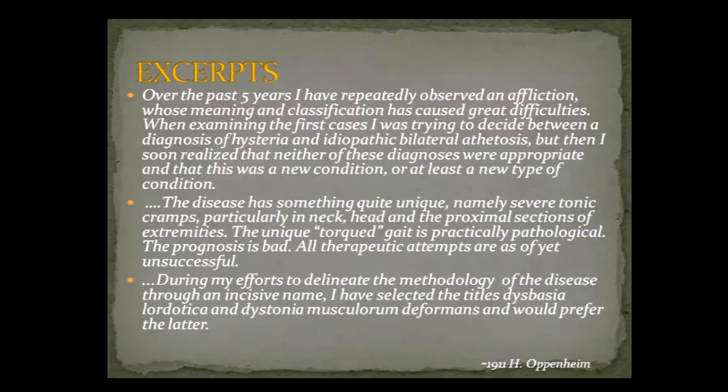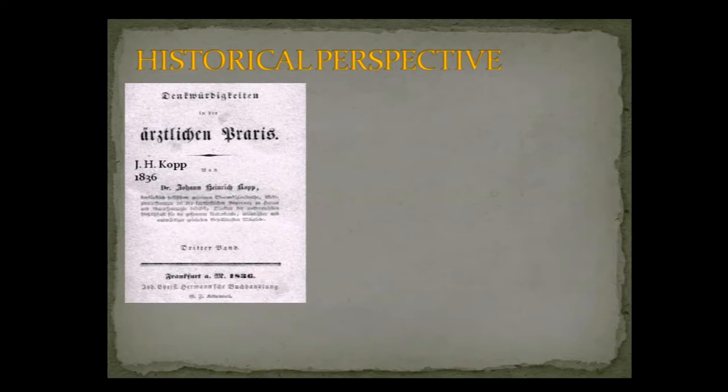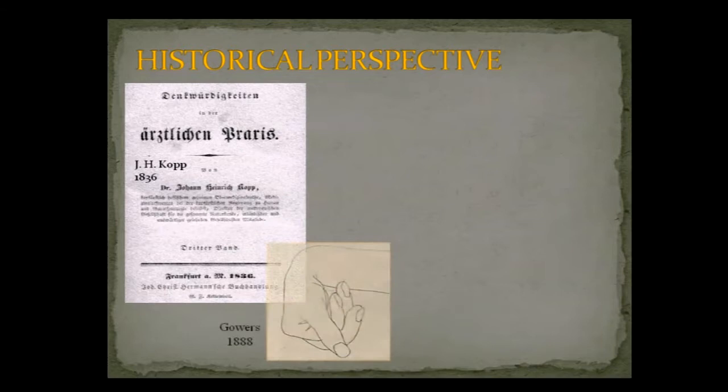He described these movements which he thought had alternating hypertonia and hypotonia. It was really difficult to put that into perspective — was it athetosis, was it chorea? He eventually said we need to do something different. The first article probably put in the literature was back in 1836, when a German neurologist, Dr. Kopp, described some features now more suggestive of writer's cramp. Gowers also described something similar to writer's cramp, but at that time they were confusing it with athetosis.